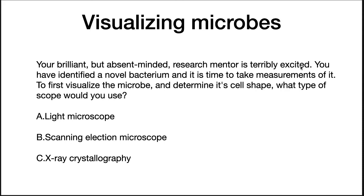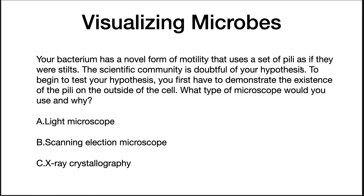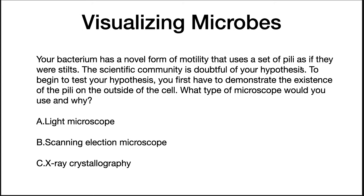Let's see how you're doing on understanding which microscopes you would use for various methods. Your brilliant but absent-minded research mentor is terribly excited. You have identified a novel bacterium and it's time to take measurements. To first visualize the microbe and determine cell shape, what type of scope would you use? Your bacterium has a novel form of motility that uses a set of pili as if they were stilts — to demonstrate the existence of pili on the outside of the cell, what type of microscope would you use and why? You have discovered the pili you hypothesized. You now want to determine the exact structure of the protein that forms the pili — there's only one protein. What method would you use?